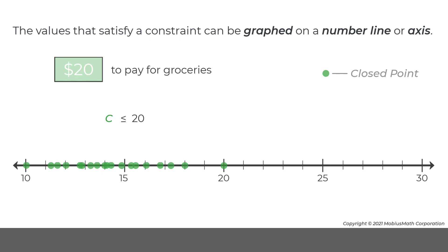Then, all the other values that satisfy this constraint can be represented by a shaded line with an arrow at the end. Note, the arrow indicates that there are additional values less than 10 that satisfy this constraint.